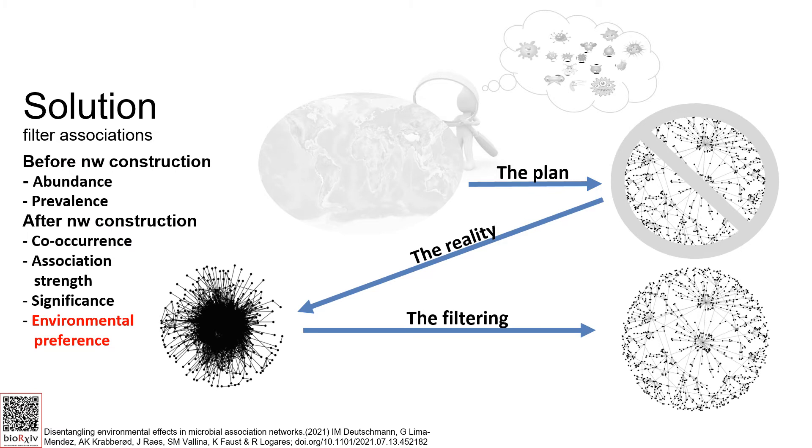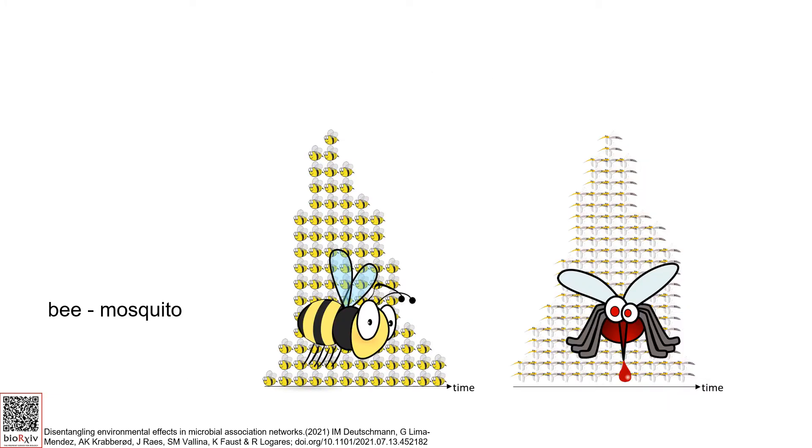There are different filters that can be applied before and after network construction. In my first project I focused on detecting environmentally driven edges. Imagine I count the numbers of bees and mosquitoes over a year. Mathematically, we would obtain a strong correlation.